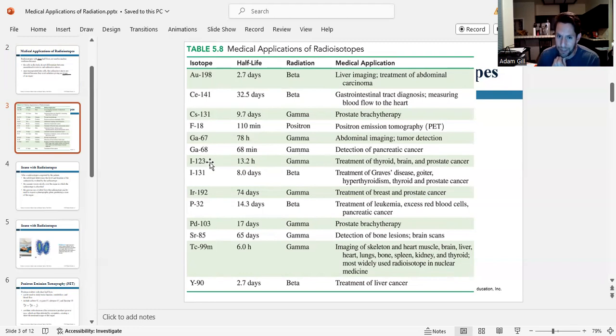Iodine-123 has a half-life of 13.2 hours. It's a gamma emitter. We use this to treat thyroid, brain, and prostate cancers. Iodine-131 has a half-life of eight days. It's a beta emitter. We use this to treat Graves' disease, goiters, hyperthyroidism, thyroid, and prostate cancer, and we can also use it as an imaging tool.